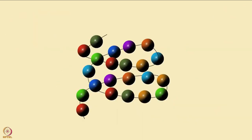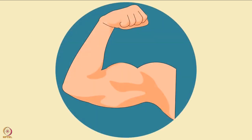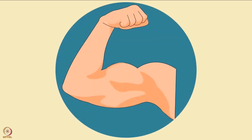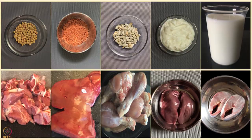We constantly break down proteins and make new proteins. We cannot store protein. So we need to get enough protein from various food sources daily. Functions and daily requirements of protein are discussed in another tutorial.